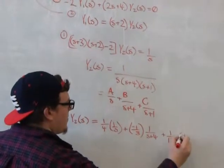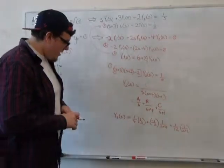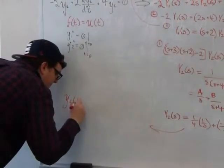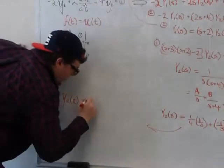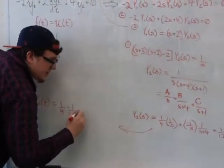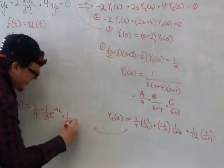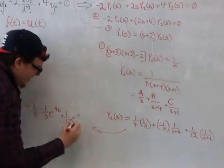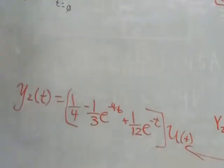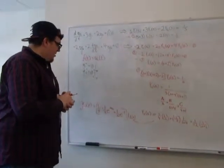So now these are all things that we can easily take the inverse Laplace transform of. And if we do so, we get that y2(t) is going to equal 1/4 - 1/3 e^(-4t) + 1/12 e^(-t), all times the Heaviside function. You can't forget to multiply by the Heaviside function at the end or you can't use our unilateral Laplace transform. So we have y2(t). So now we have to solve for y1(t).